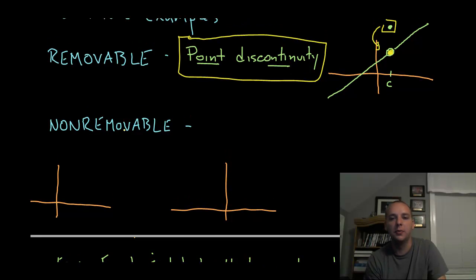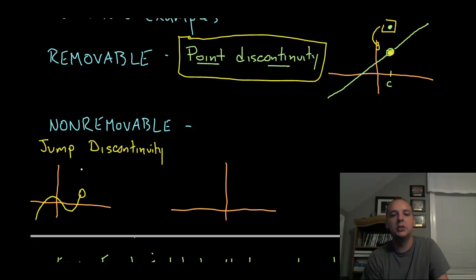Next up, non-removable, there's two types of common non-removable discontinuities. First up is what we call a jump discontinuity. And these kind of look like this: your graph is going along, going along, and then it stops, it jumps, thus the name jump discontinuity, jumps somewhere else. Maybe it's defined here, maybe it's not defined here, maybe it's defined for some other value other than where these holes are. But in any case, it keeps going, and there's a break right here, you see it's literally pulled apart, that's what we call a jump discontinuity.